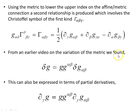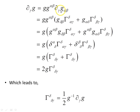From an earlier video on the variation of the metric, we had delta G equal to this object. This can also be expressed in terms of partial derivatives, where we can replace the covariant derivative with the partial derivative operator and the same result is produced — this is because it involves matrices. So having replaced the covariant derivative with the partial derivative operator, we get this object. We already have a relationship for the final term, which we found earlier. Multiplying through by the inverse metric, some things happen and the Kronecker delta applies.